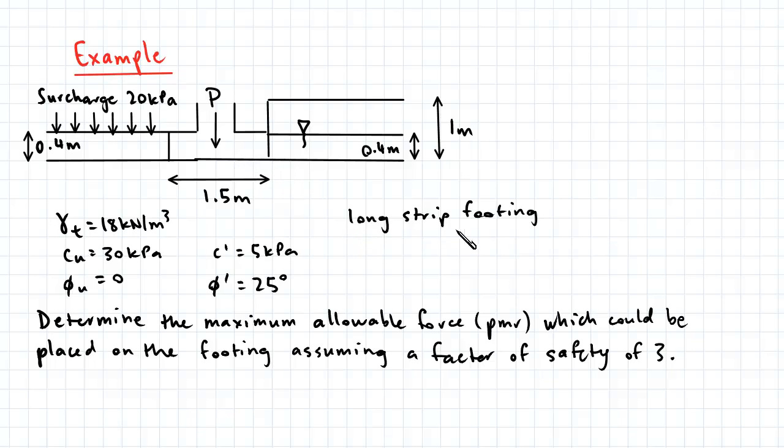Now we're dealing with a long strip footing here with a width of 1.5 meters. And the question is asking us to determine the maximum allowable force per meter run, so this is per unit length because we're dealing with a strip footing, which could be placed on the footing assuming a factor of safety of 3.